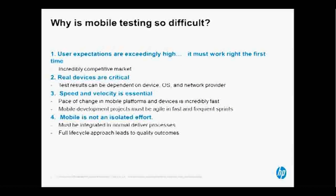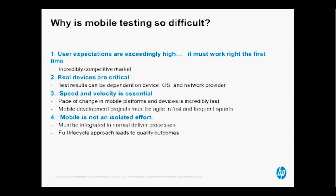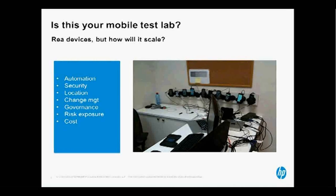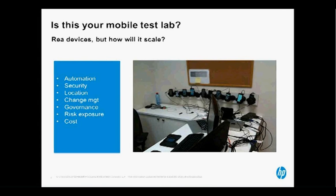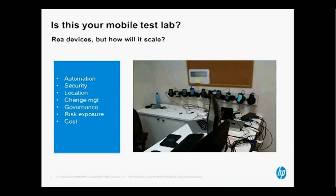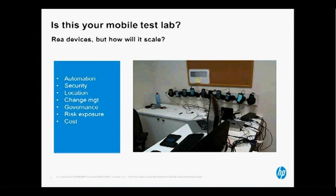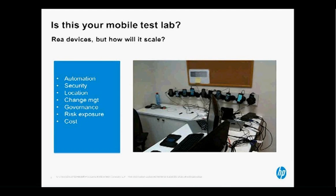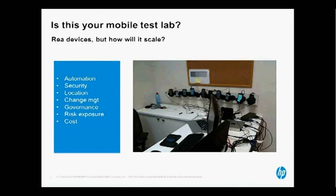We know why it's so difficult — it's the traditional QA difficulties, but now adding on all those devices that you need to test against. Typically, this is what a mobile test lab looks like: you have a number of devices, various operating systems, and you're doing what you can. There's not a lot of automation — someone picks a device, sits down, and goes through your app. There's not a lot of security checking or change management, and costs can start to get prohibitive.